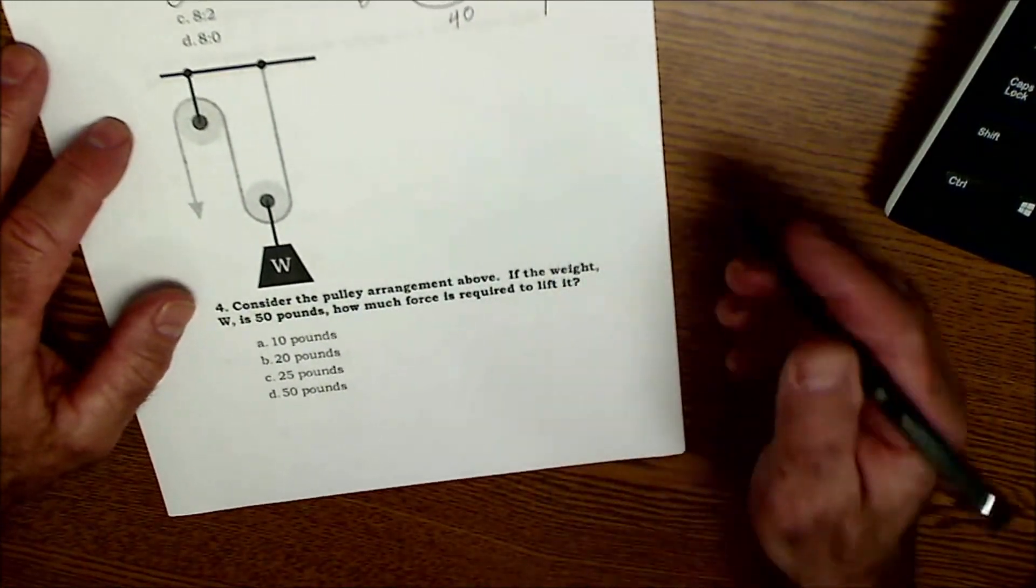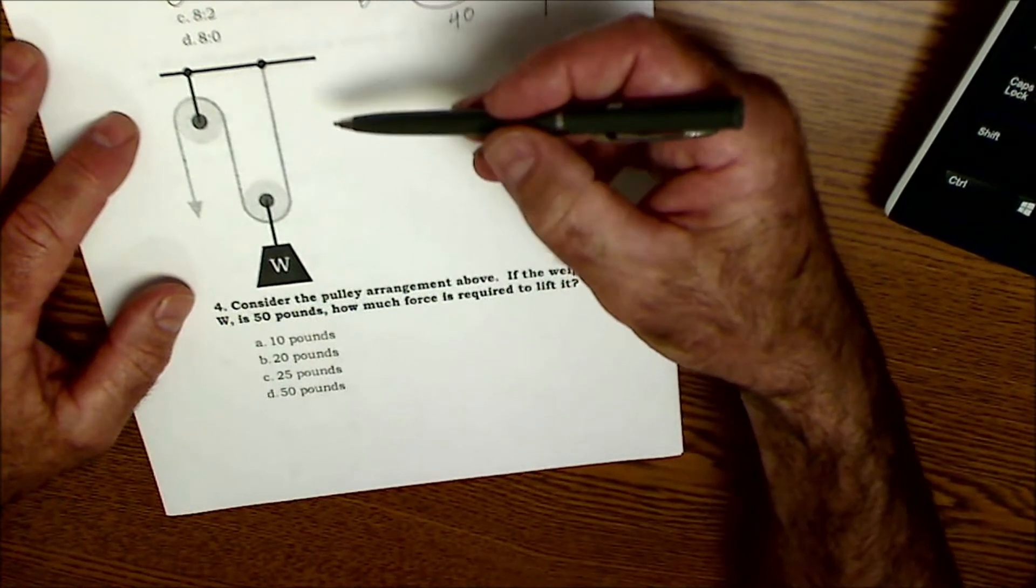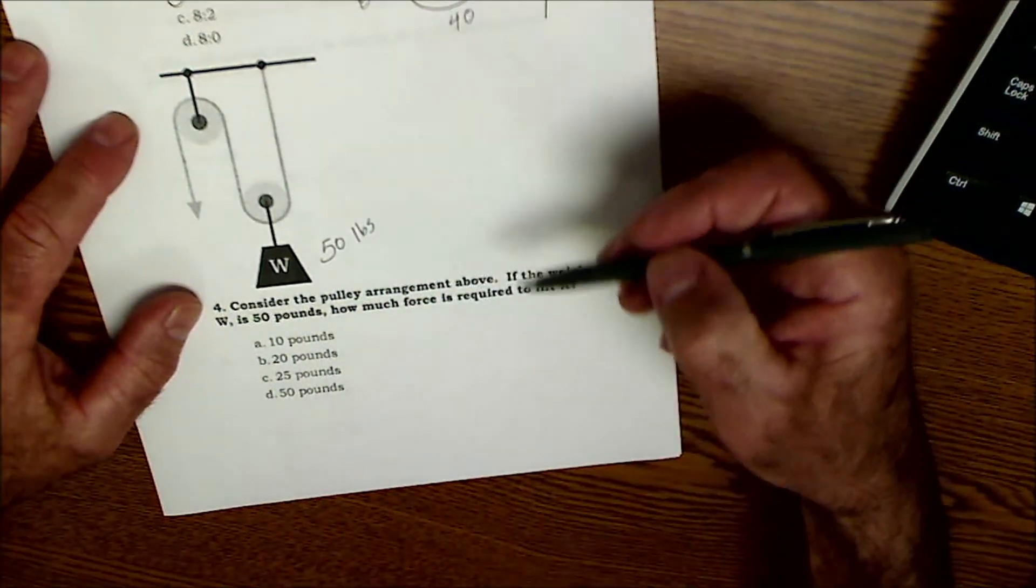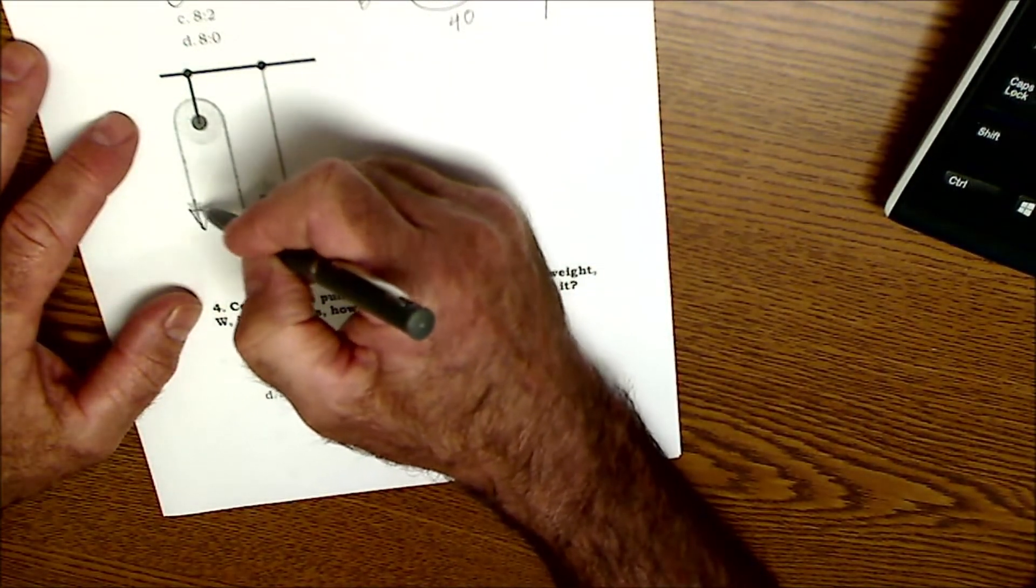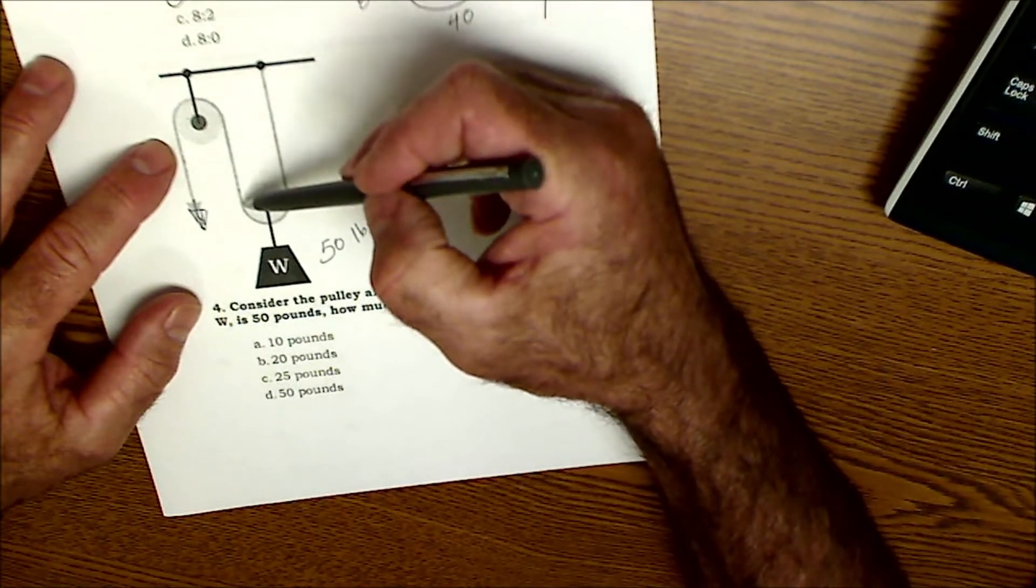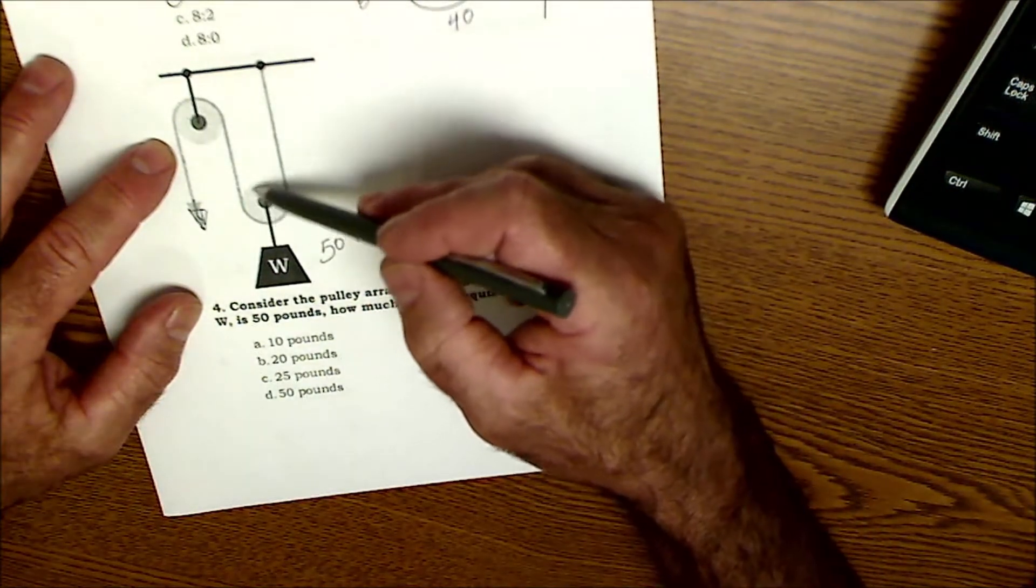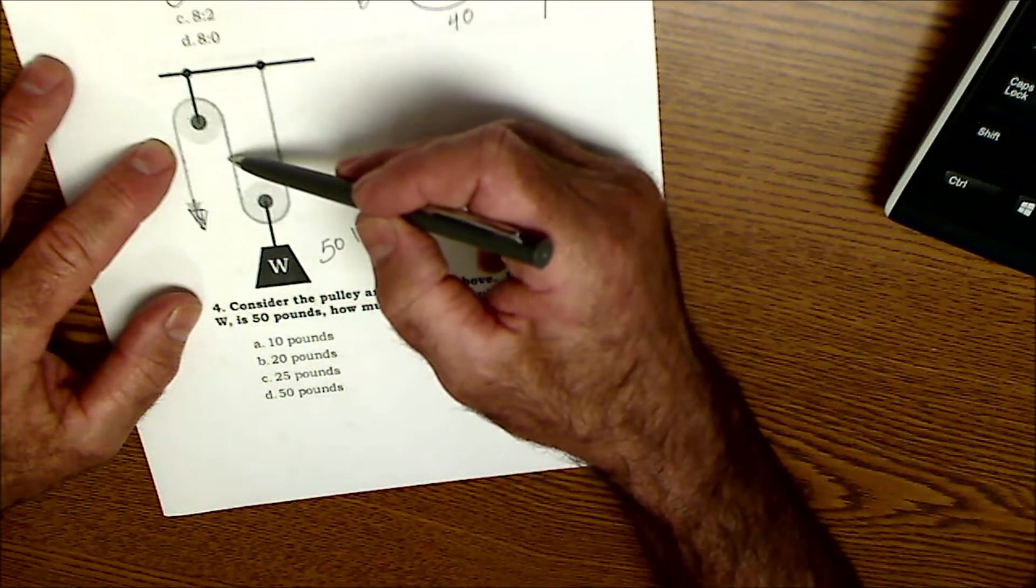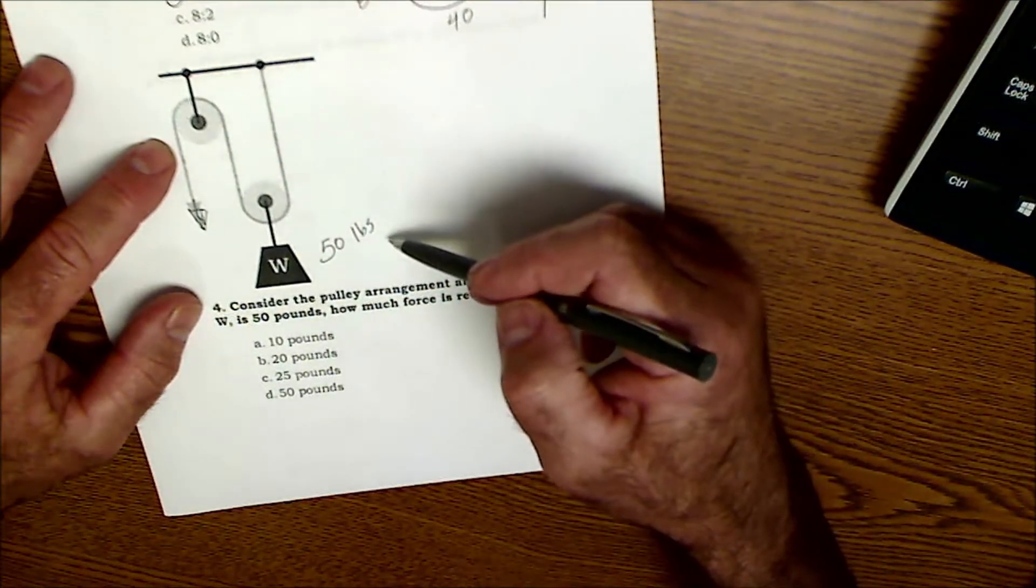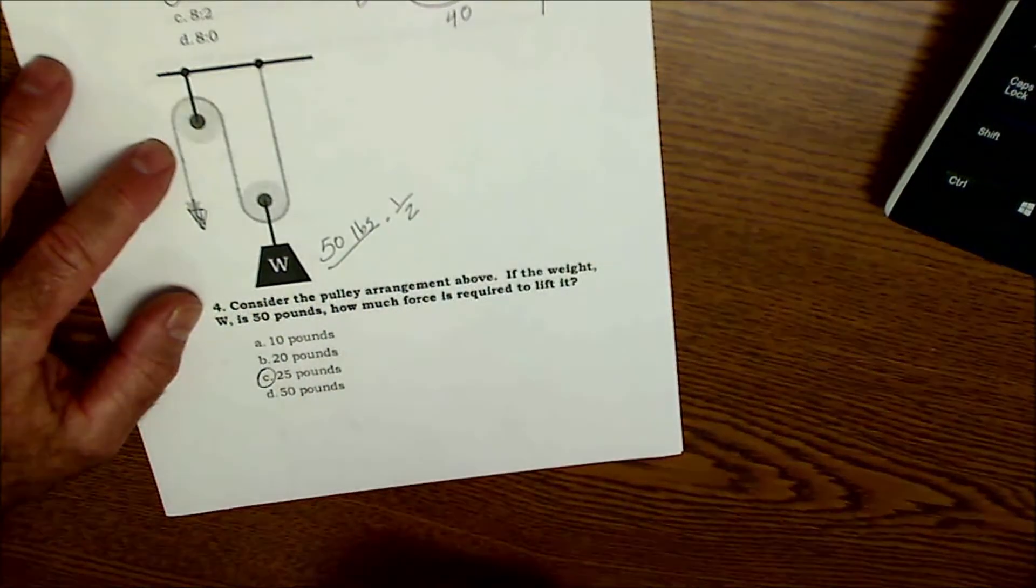Next problem on pulleys. Make sure you pause the video and figure this out on your own first. So consider the pulley arrangement above. If the weight W is 50 pounds, so 50 pounds, how much force is required to lift it? So I'm actually putting force in here. So the thing about pulleys is it's only the pulley that's traveling. So this pulley is fixed, and this is just to redirect. So this pulley actually does not offer any mechanical advantage, but this pulley travels with the weight. So I'm going to have twice as much rope going through my hands because of this setup of this pulley traveling. So it's going to take half as much force, half as much force. I'm going to multiply that by half to get 25 pounds of force.